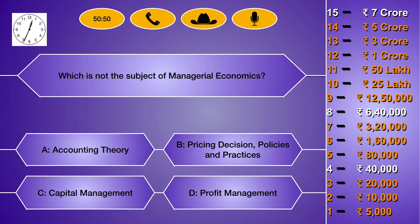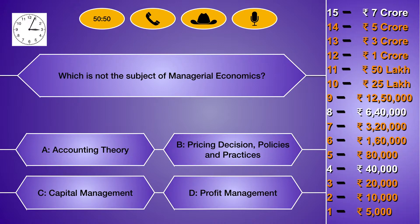Which is not the subject of managerial economics? (A) Accounting theory, (B) pricing decision policies and practices, (C) capital management, (D) profit management. The right answer is option A: accounting theory.